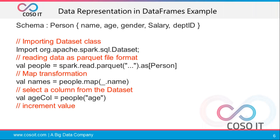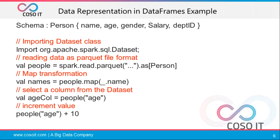You can also increment values. For example, to increase everyone's age by 10, you can use people.age + 10, which will increase all rows' age values. This is a good example of how to make a transformation when you have this type of Dataset schema.